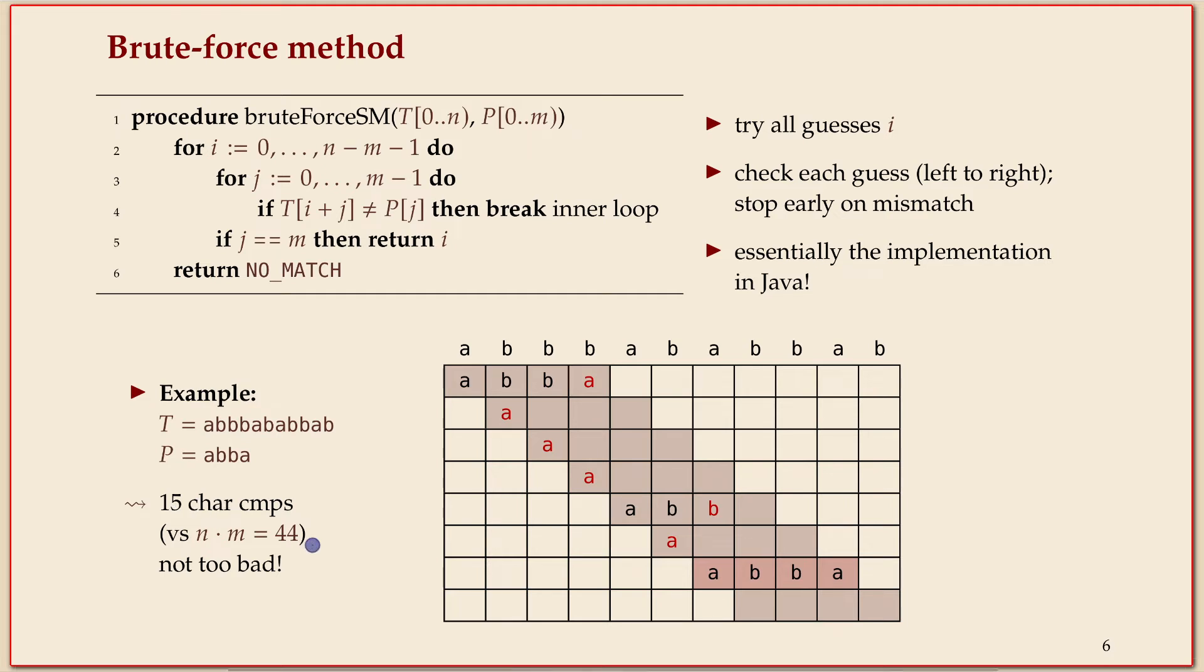15 we actually did; 44 would have been the worst case—all the shaded cells. So it doesn't look like brute force is doing too badly here. I think this is still true: in Java, this method is essentially what they use.